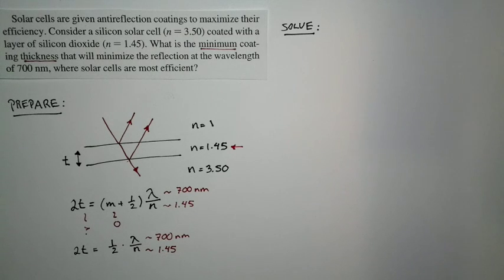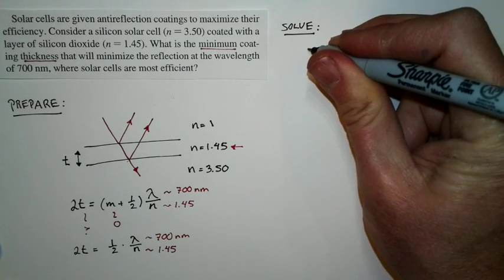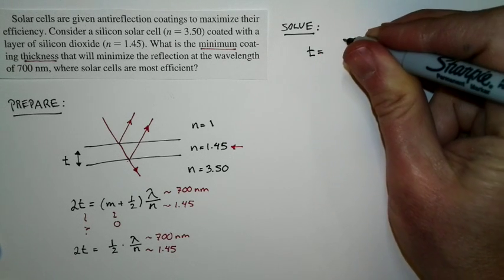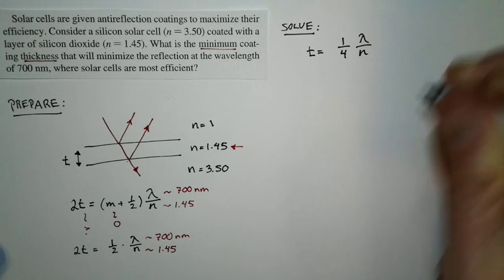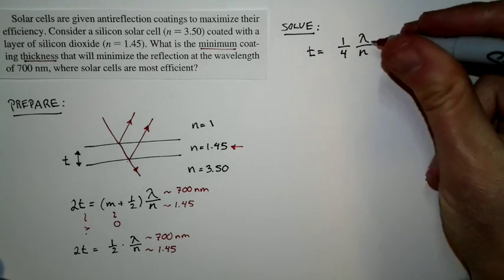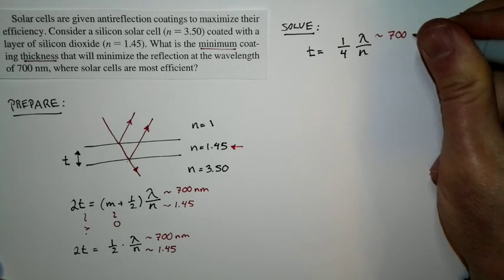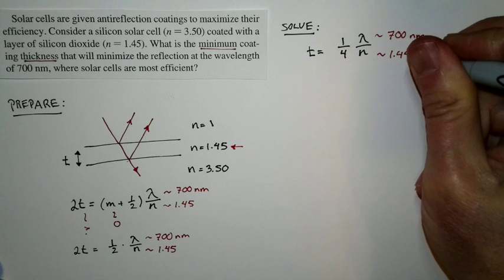But let's go ahead and do our solution. And I'm going to take this equation. I'm going to rewrite it this way. The thickness is just equal to one quarter times lambda over n. And we know what values we use for this. The wavelength of light is 700 nanometers. The index of refraction is 1.45.